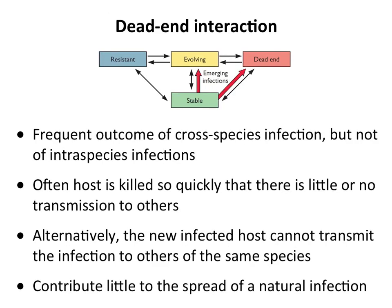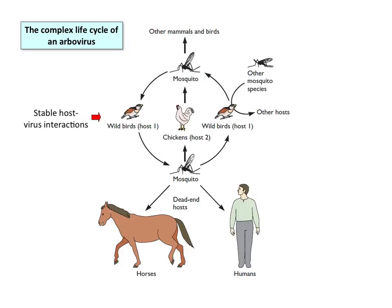A dead-end interaction is when a virus infects a new host, may cause disease, but is not transmitted to anyone else. This often happens in cross-species infections. Sometimes the host is killed very quickly, or the infected host doesn't make enough virus to transmit. This happens a lot with vector-borne diseases — humans or other animals are dead ends and don't spread the disease. It could potentially evolve to spread, but this is a specific class where we don't see that.